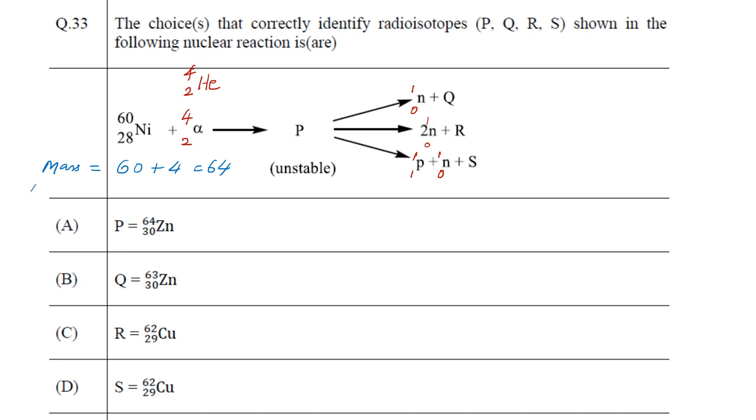When talking about the atomic number, it is 28 plus 2 which equals 30. This reactant has a total mass of 64 and atomic number of 30. The unstable product that is formed in between must have the sum total value of both the reactants.